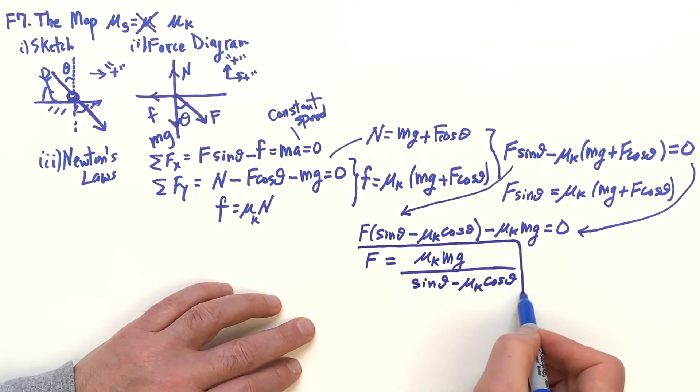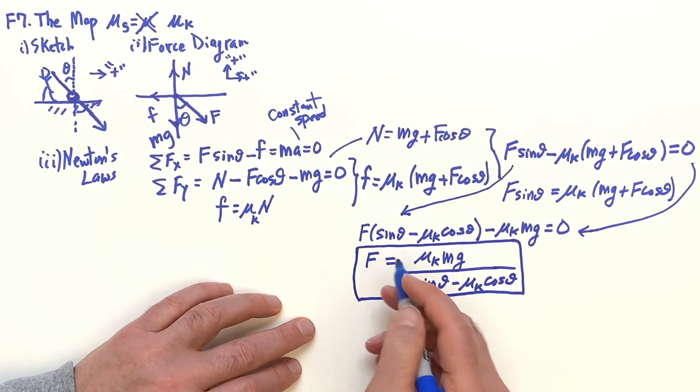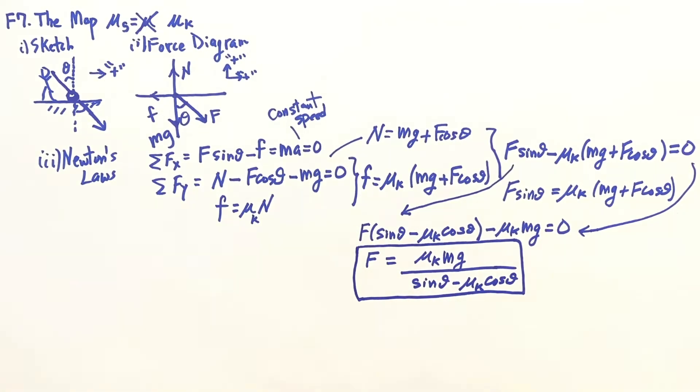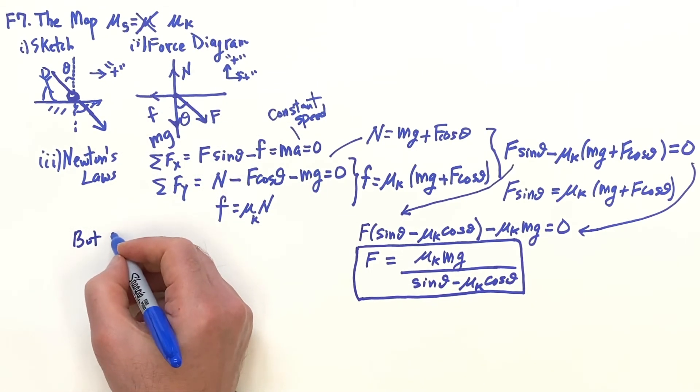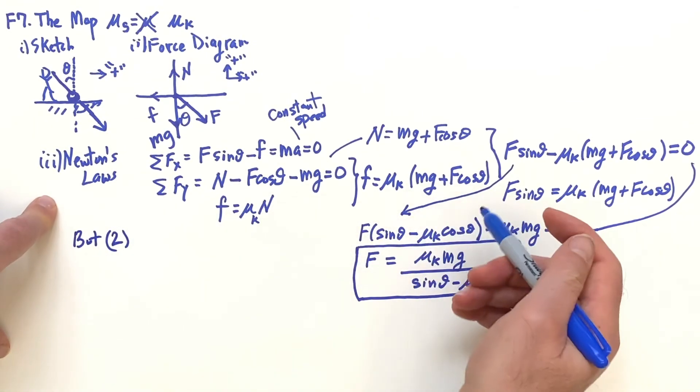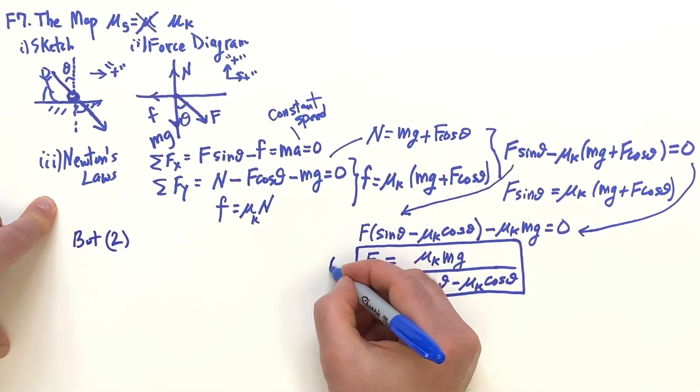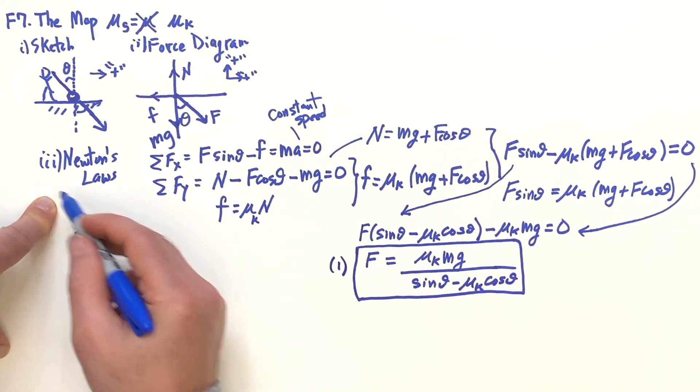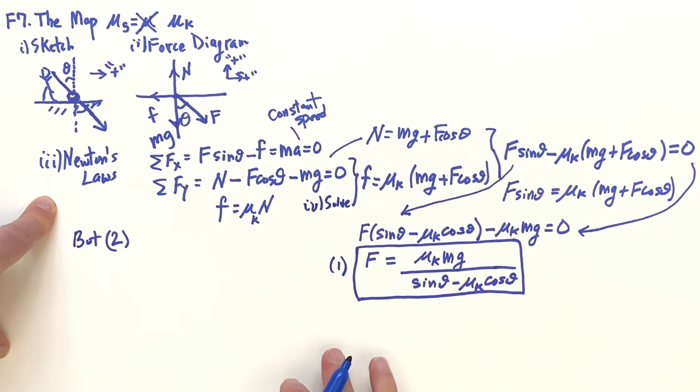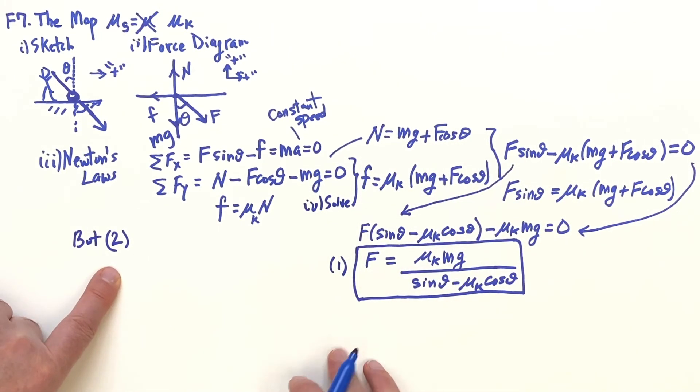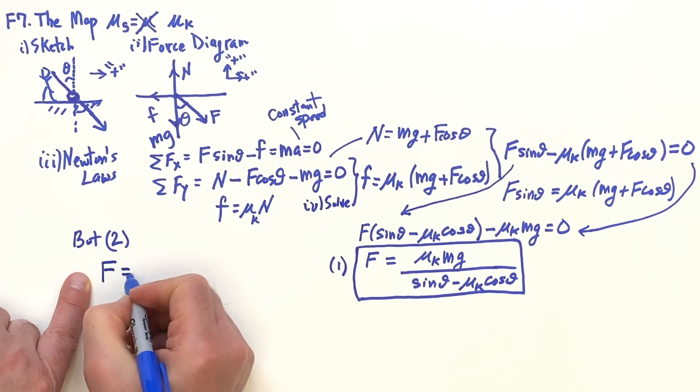So F = (μ_k mg)/(sin θ - μ_k cos θ). This is the force that you would need to go at constant speed across the floor. Now the second question was the angle so that the mop won't move. In the second case, everything's going to be the same, but now for the second part of the problem - this was the first part, and if you want to include step four, you could just have here "solve."